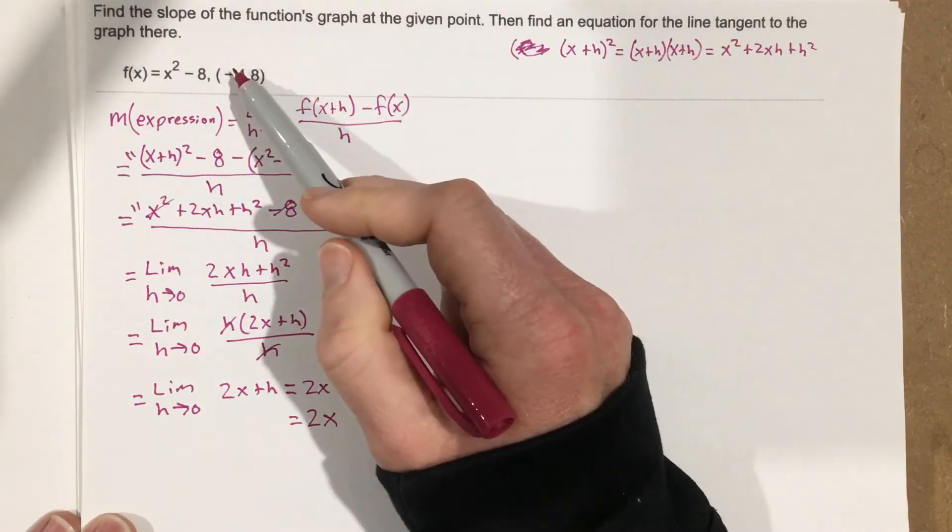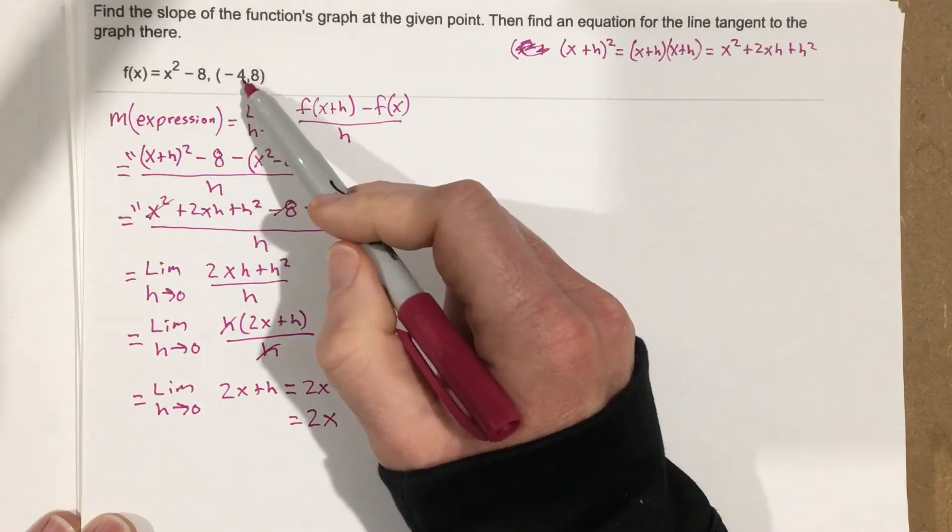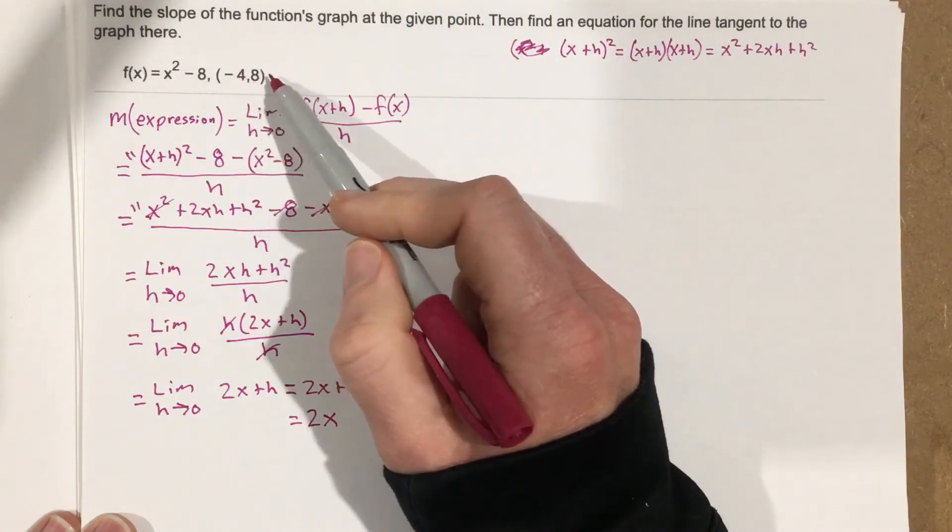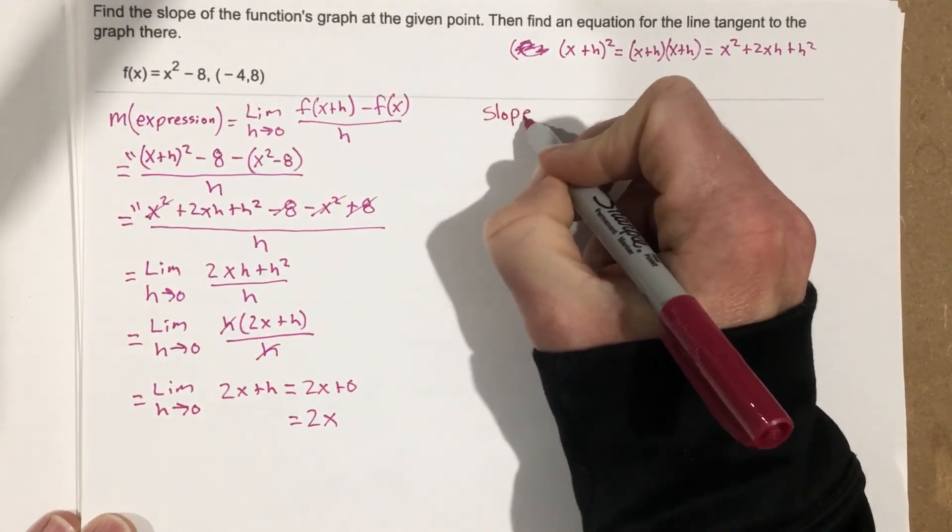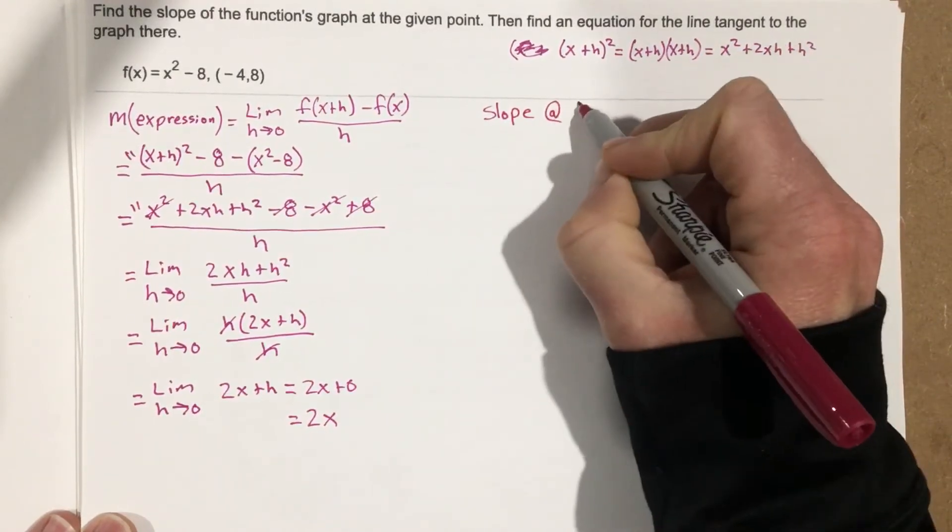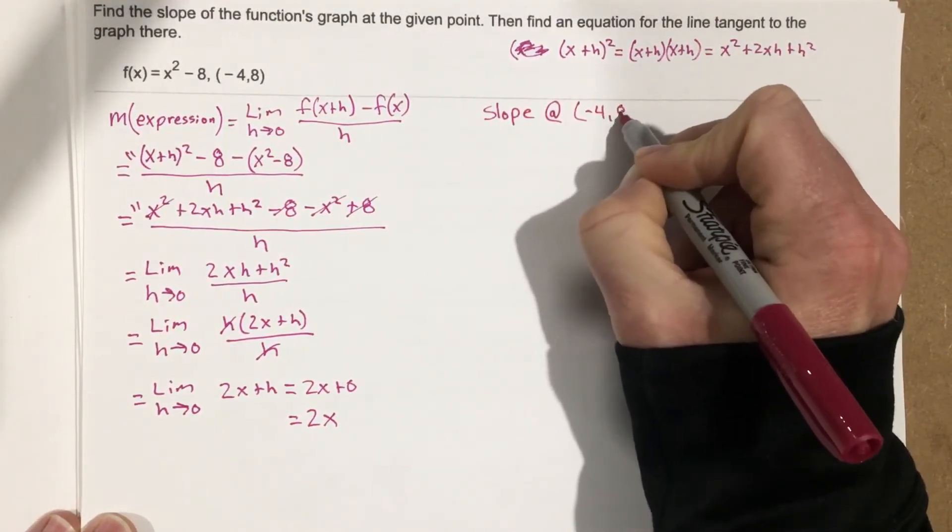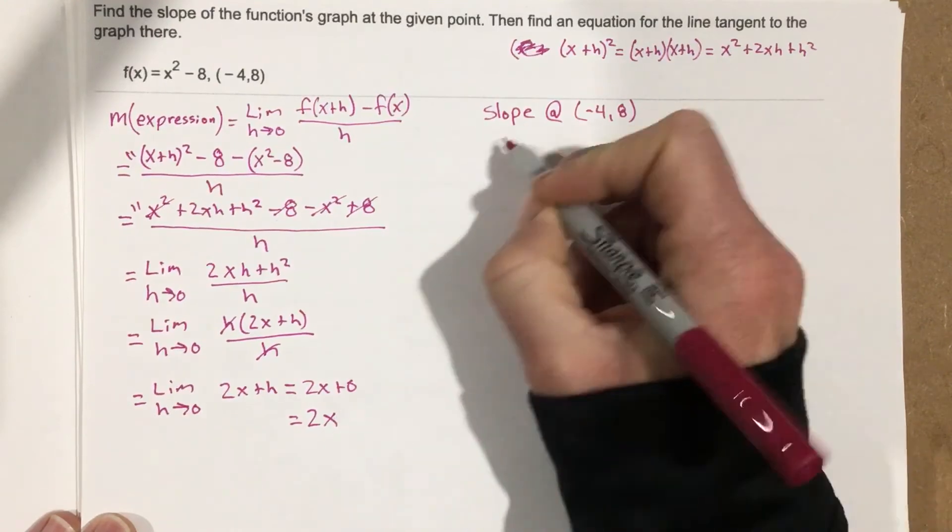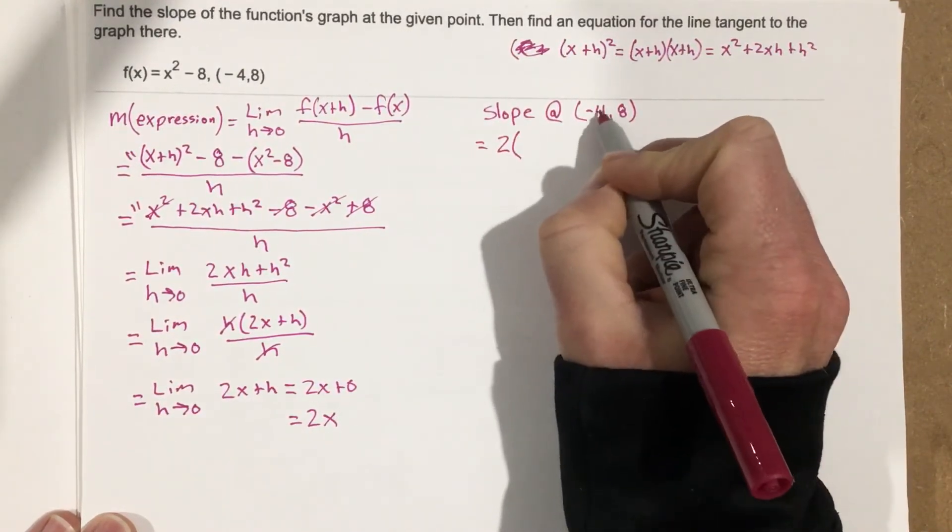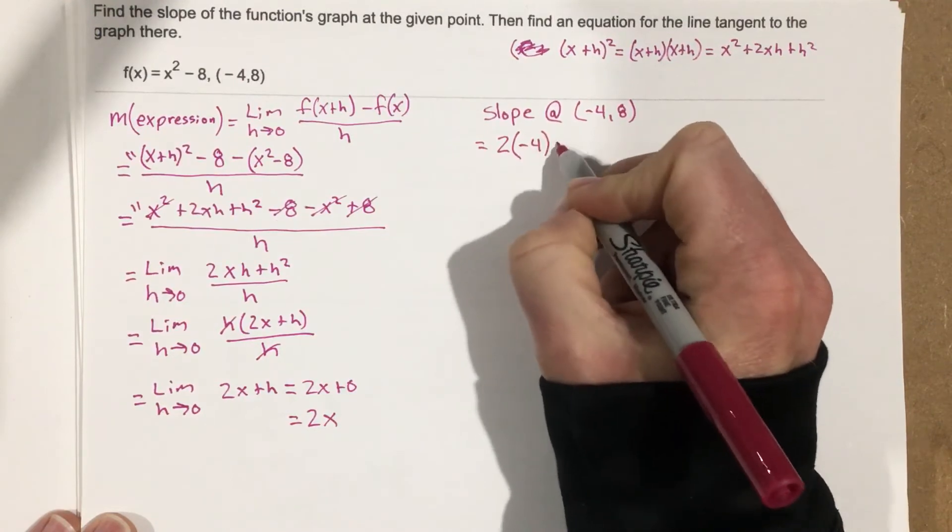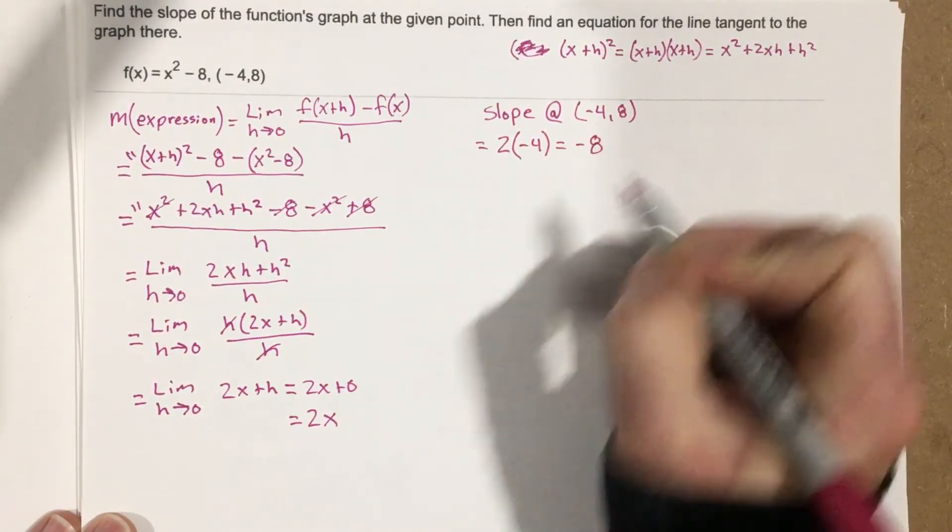Now we're looking for a specific slope at (-4, 8). So we're going to write that we want to find the slope at (-4, 8). So that means we're going to take 2x and we're going to replace the -4 for the x value, and that tells us that our slope at that point is -8.